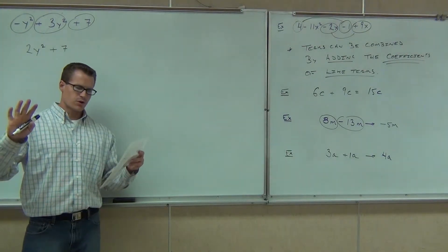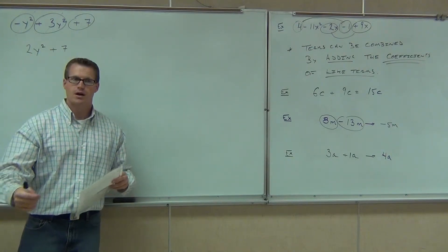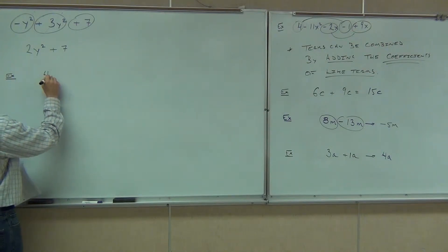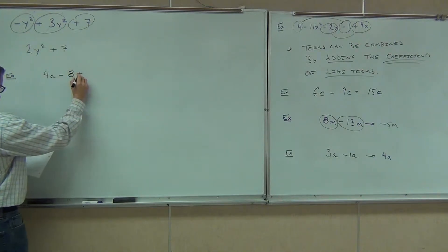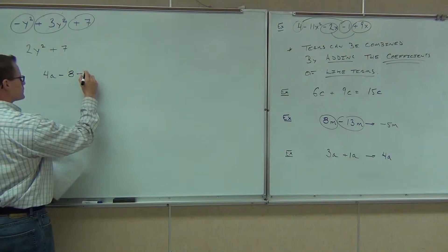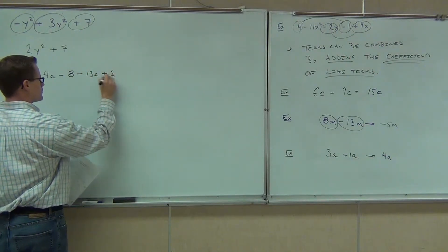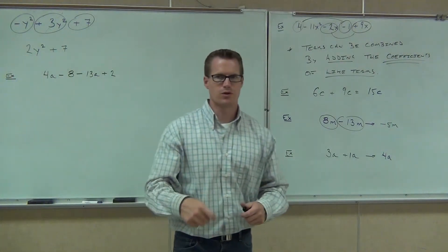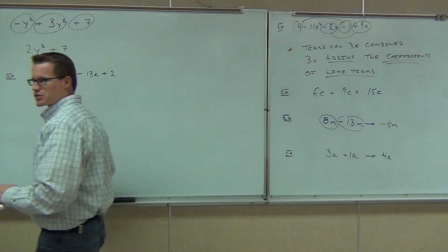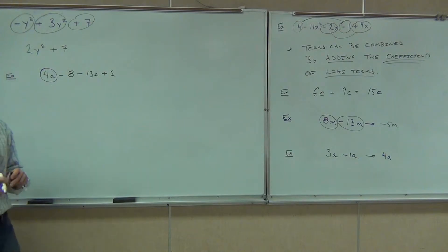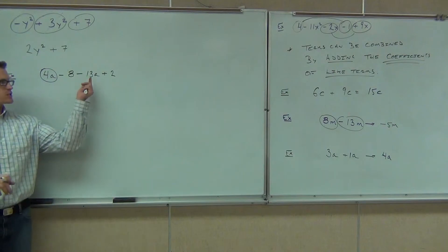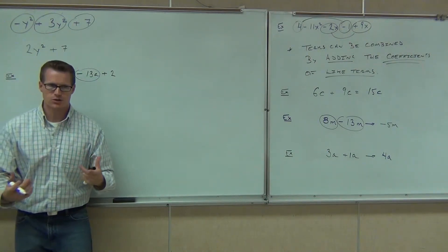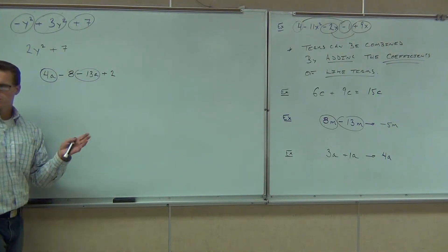So here would be like having two of something plus seven of something completely different. You cannot combine those unless you have the same variable part. That's the answer — that's as far as you can go. Let's do two more together. I'll give you about four to do on your own just to practice this, and then we'll start going on how to multiply this stuff. Okay, you know the drill now. How many terms? Four. We're going to start with the 4A — that means we're going to circle that. Now we're going to look for any like terms with 4A. Are there any like terms with 4A? Negative 13A. You don't have to reorder these things in order to combine like terms — wherever they're at, just circle with the sign.